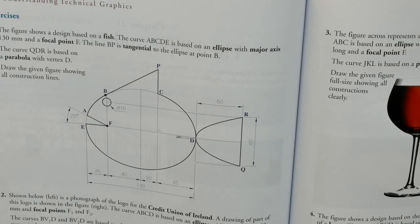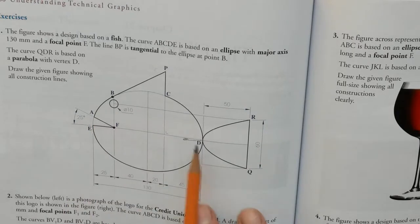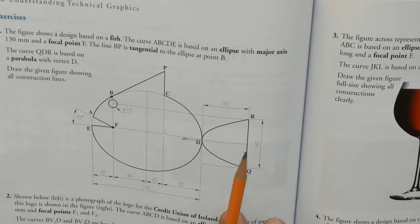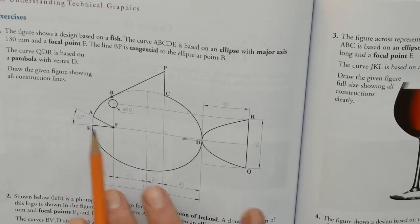So for this question, there's a few things in it. You've got an ellipse here and you've got a parabola there. They're the main two things. So you can start with the ellipse, and we're going to start with the ellipse.